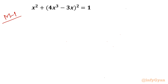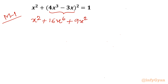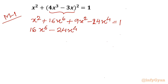Let's get started with the algebraic method where I will expand (a - b)² to get 16x⁶ + 9x² - 24x⁴ = 1. Taking all terms to one side, it becomes 16x⁶ - 24x⁴ + 10x² - 1 = 0.